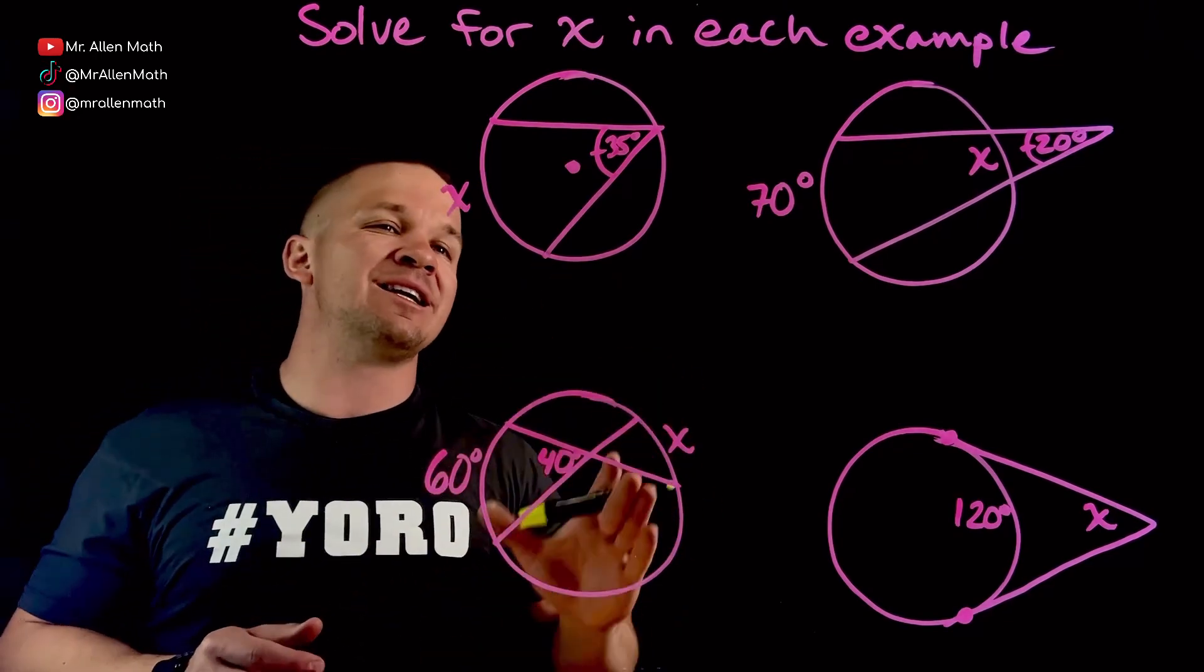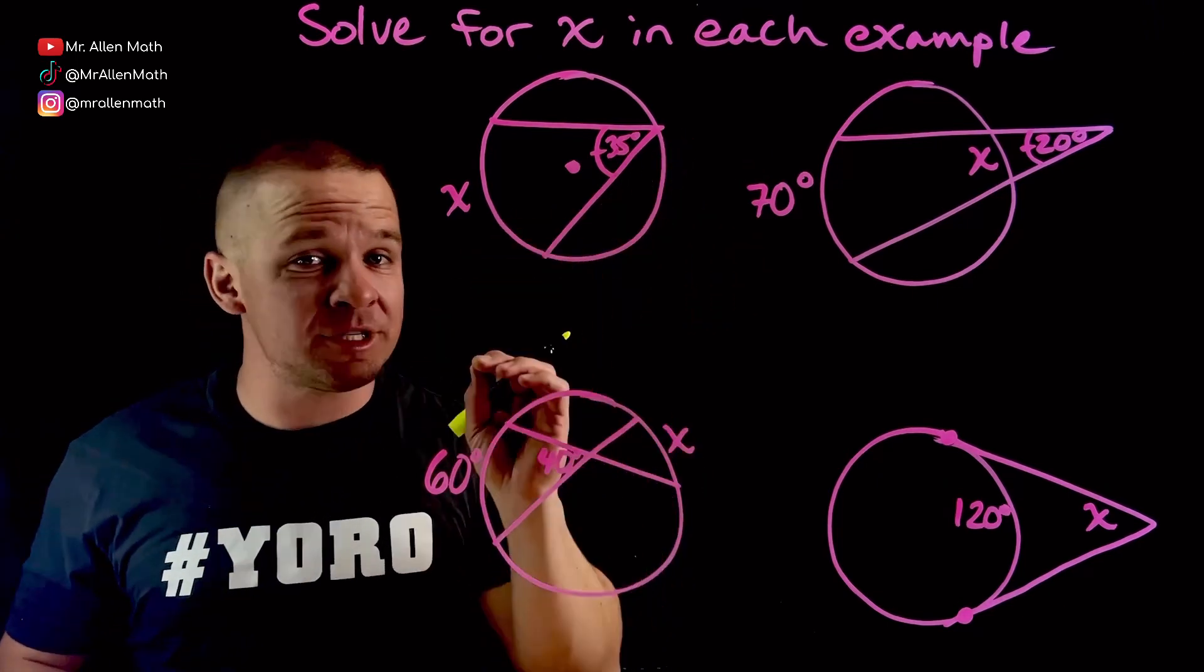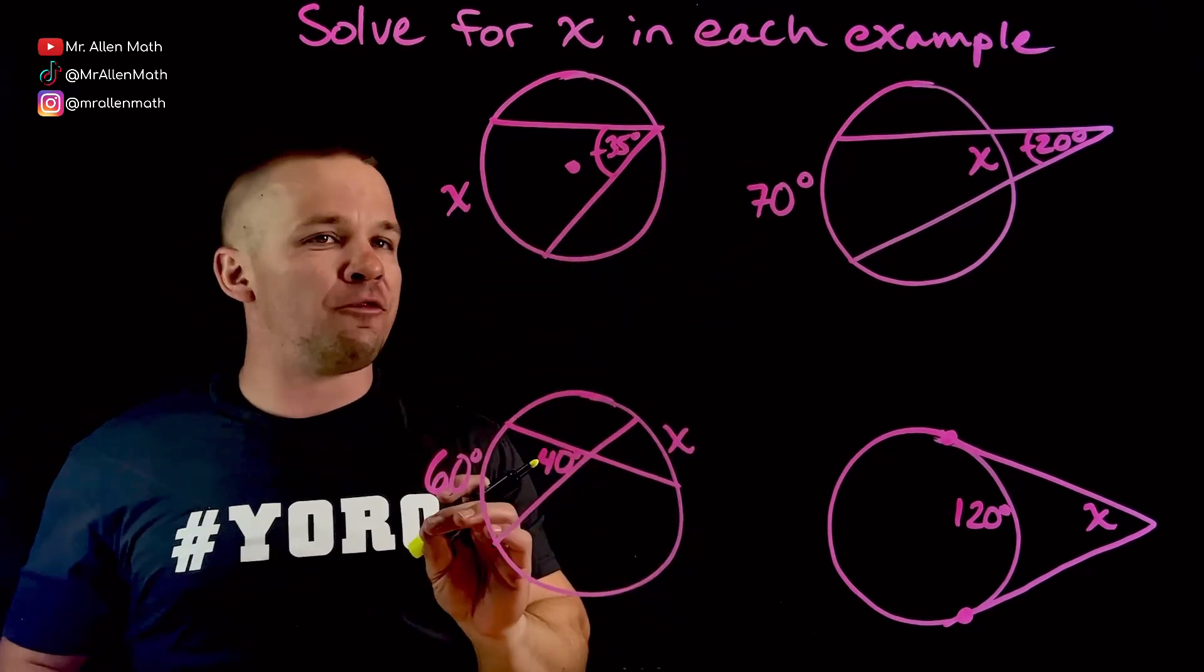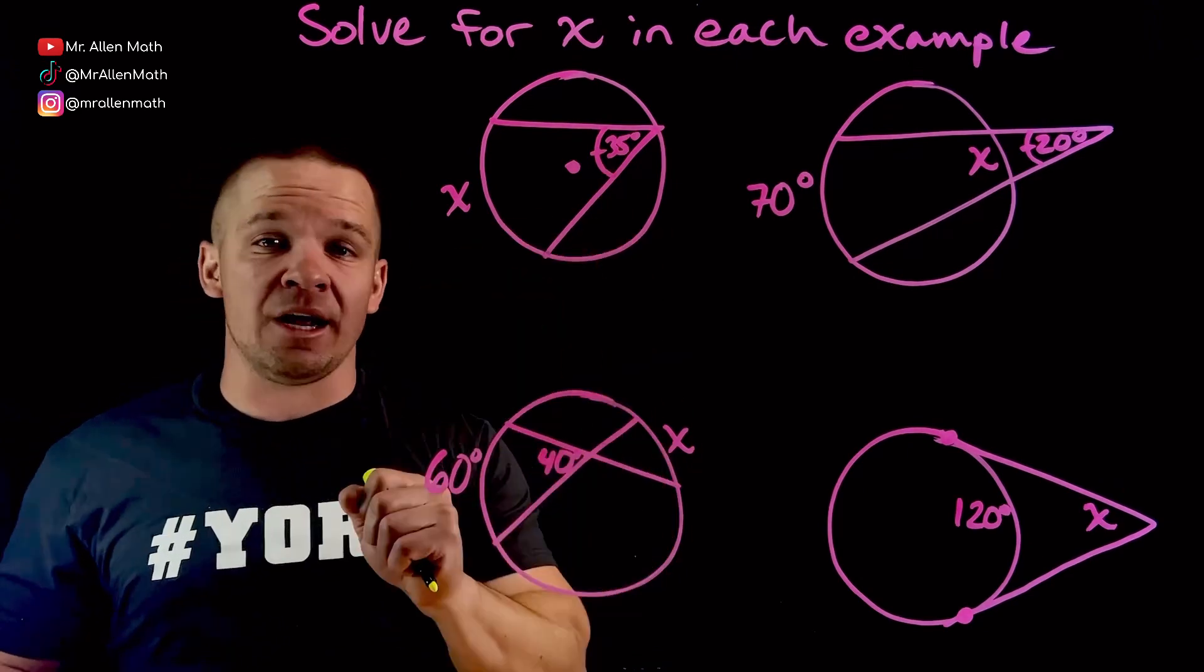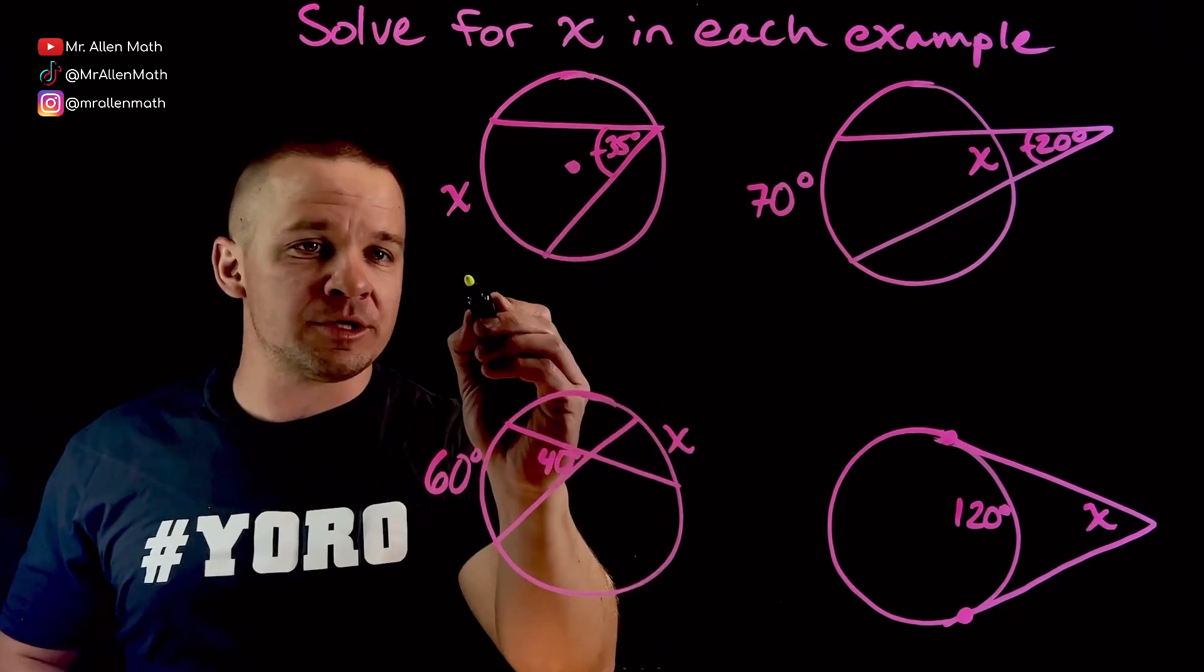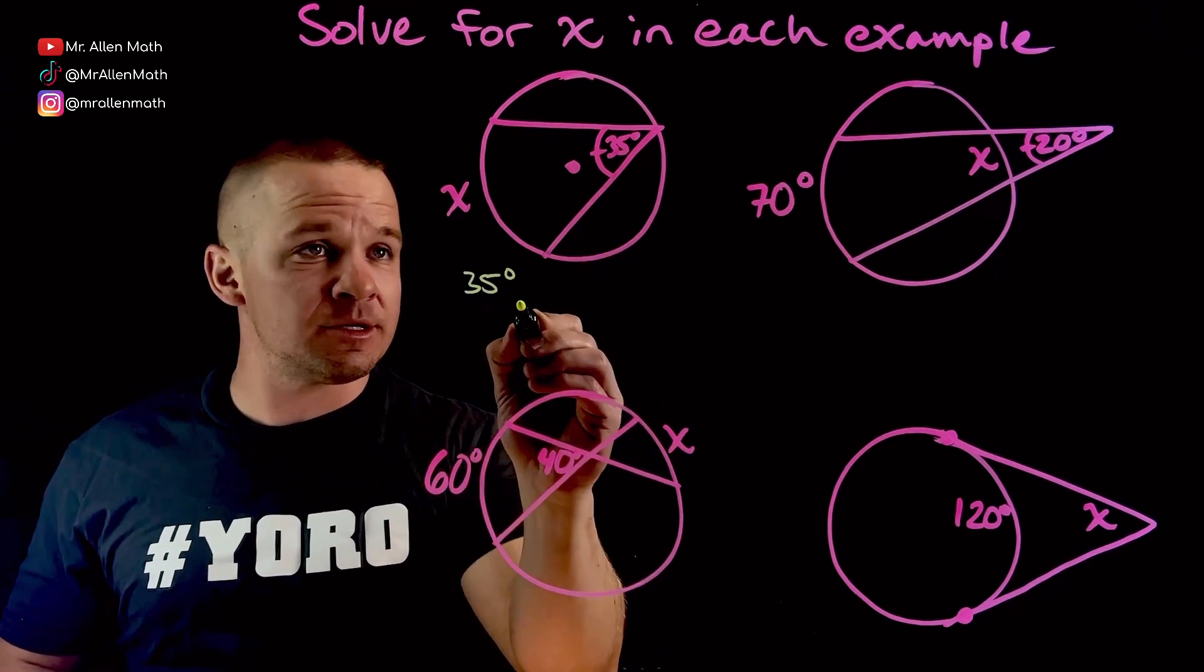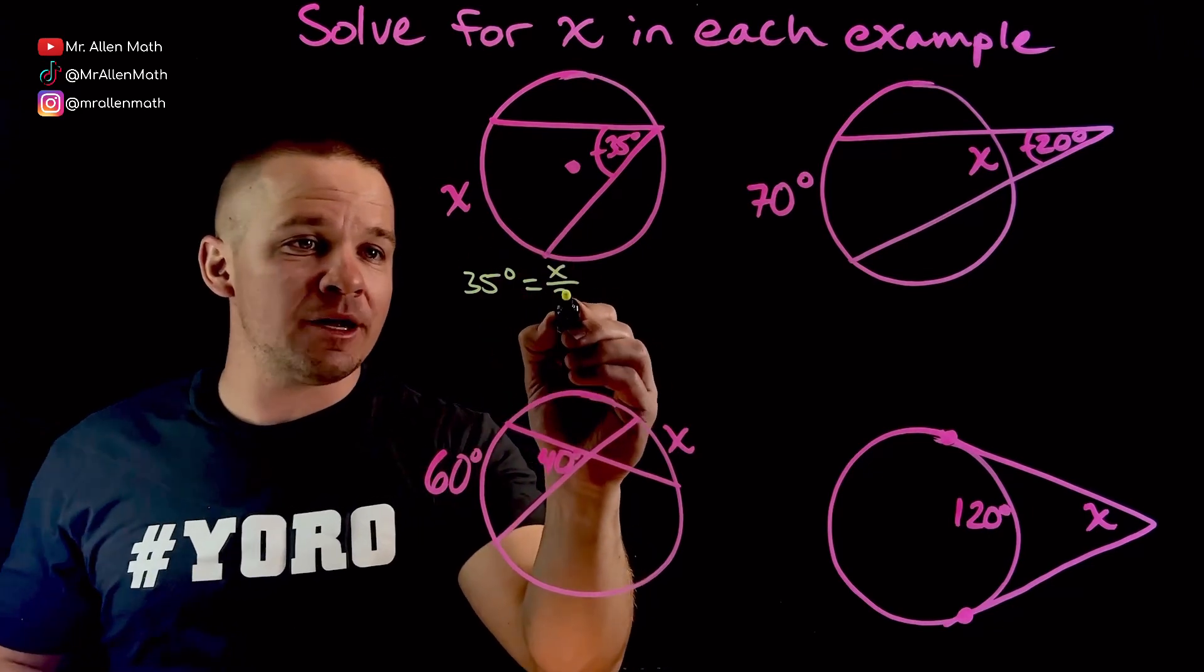Alright, we're going to solve for X in each. First one here, where is my angle located? The vertex is on the angle, therefore it is an on angle, and we'll follow that formula. I know that the on angle is half of my intercepted arc, so let's set that up. So my angle is 35 degrees, so 35 degrees equals my arc, which is X divided by 2.